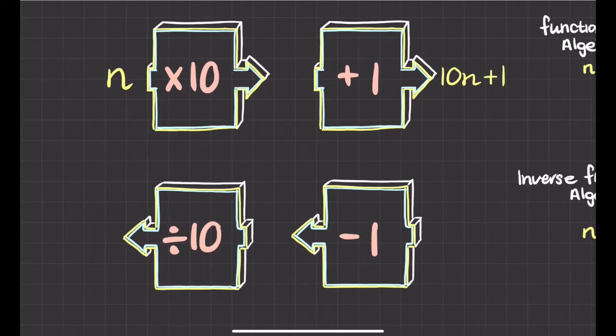For the inverse function, notice that now I'm actually going in reverse - all my arrows go back to where we started. So now let's see what happens. Because all the arrows have flipped around, this is my input on this side now and this is my output. Let's see what happens if I put in the number n. I put it in, I take away 1, so we'll have n take away 1, and then I need to divide it by 10.